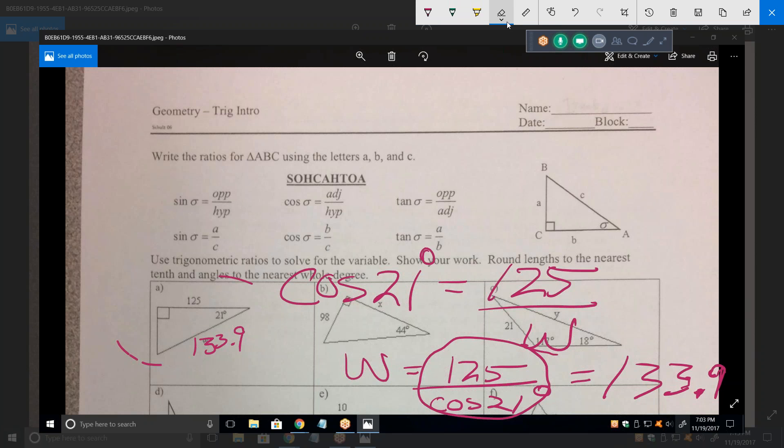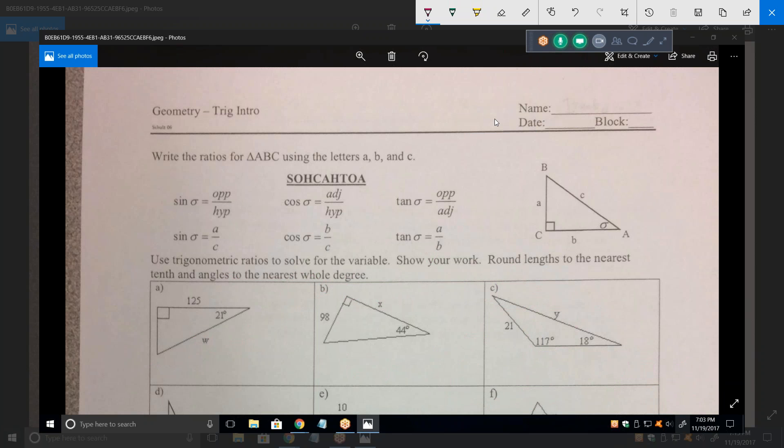All right. Let's look at the next one. So what trig function with regards to that angle 44 degrees relates 98 and X? Correct? No. Remember, the hypotenuse is always opposite the right angle. So, the hypotenuse is the bottom. The X is the adjacent. So, what trig function deals with the opposite and the adjacent?